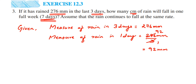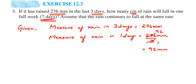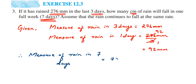For one day it is 92 millimeters. For two days it would be 92 plus 92, and for three days we add 92 three times. Instead of adding seven times, we simply multiply 92 by 7. Therefore, the measure of rain in one full week — seven days — equals 7 multiplied by 92 millimeters, which gives us 644 millimeters.